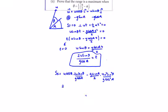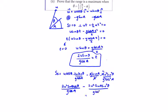Tidying this up, we get 2u squared sin theta cos theta over g cos alpha, and for the second term we get 2u squared sin alpha sin squared theta over g cos squared alpha.